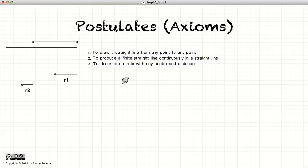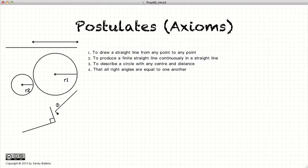The third postulate is that it is possible to draw a circle given any center and a radius. The fourth postulate states that any right angle is equal to any other right angle, or that all right angles are equal.